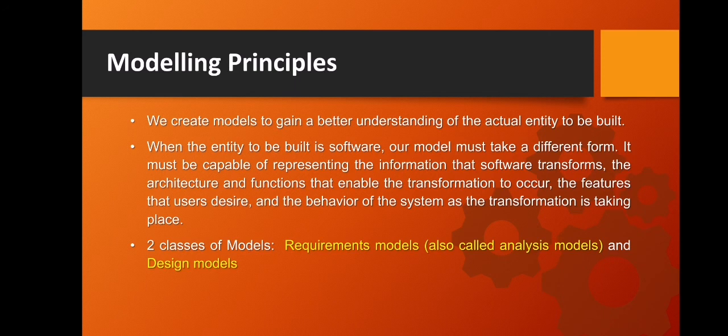In software engineering, two classes of models can be created. The first is the requirements model, also called the analysis model — it represents customer requirements by depicting the software in three different domains: the information domain, the functional domain, and the behavioral domain. The second class is design models — design models represent characteristics of the software that can help practitioners construct it effectively, including the architecture, the user interface, and component-level detail. Each of these classes has its own principles.